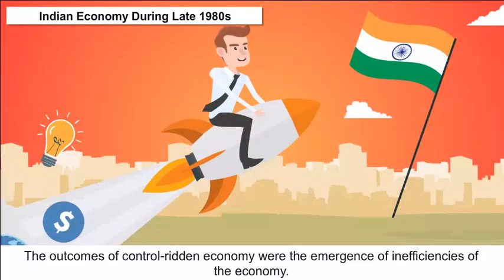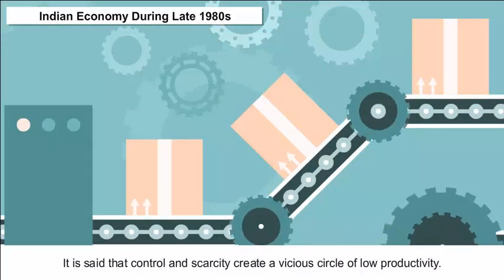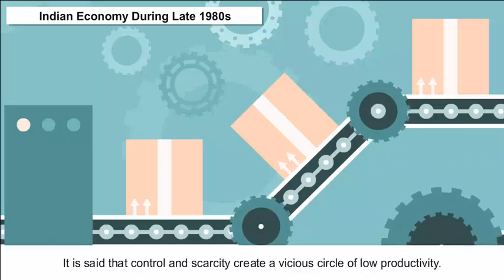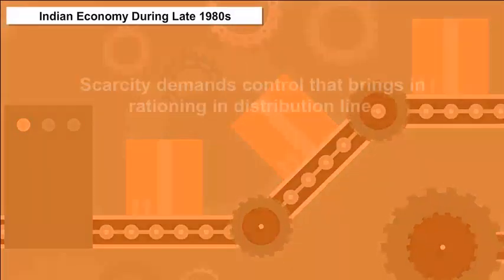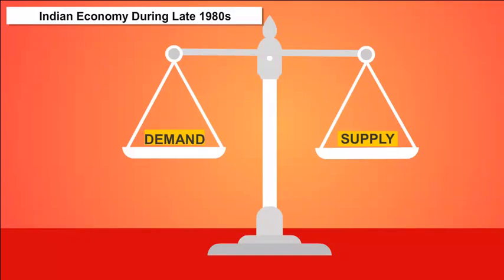The outcomes of the control-ridden economy were the emergence of inefficiencies. Controls and scarcity create a vicious circle of low productivity: scarcity demands control, which brings rationing in the distribution line. This creates delays in the creation of new productive capacity, lowers output, and worsens demand-supply imbalances.